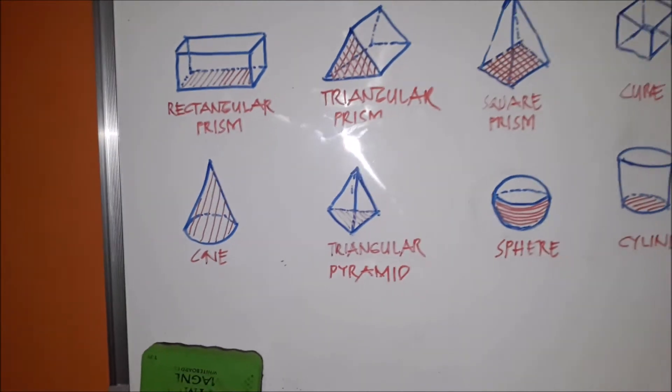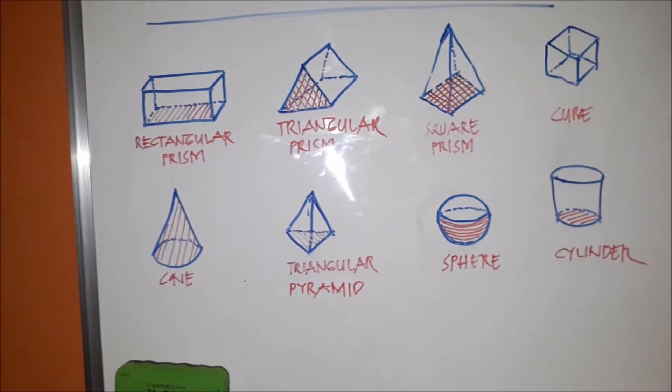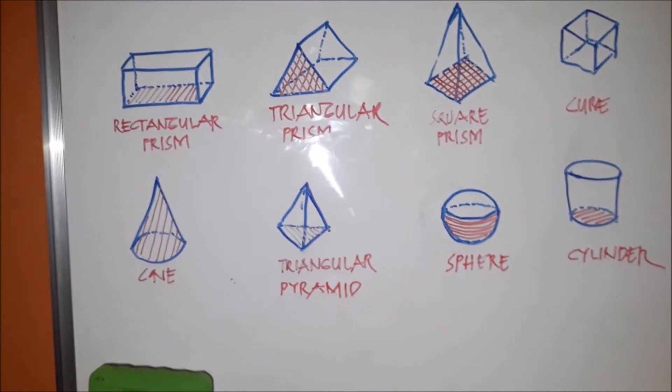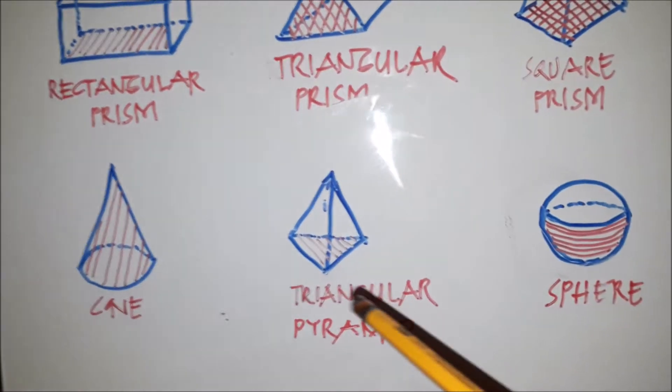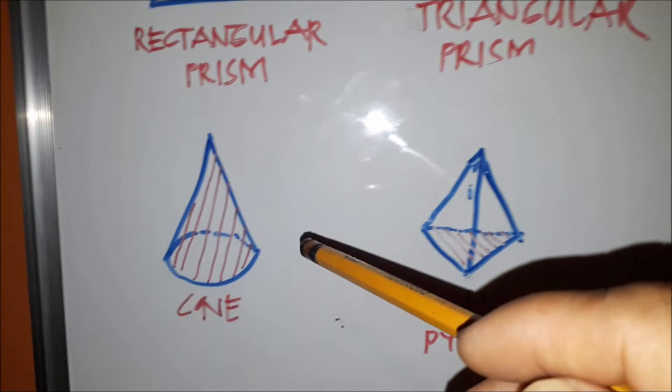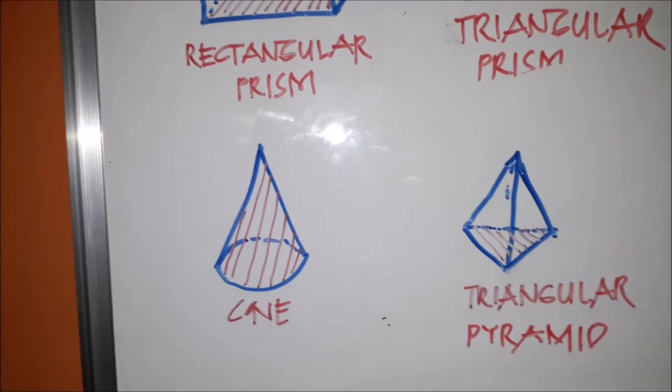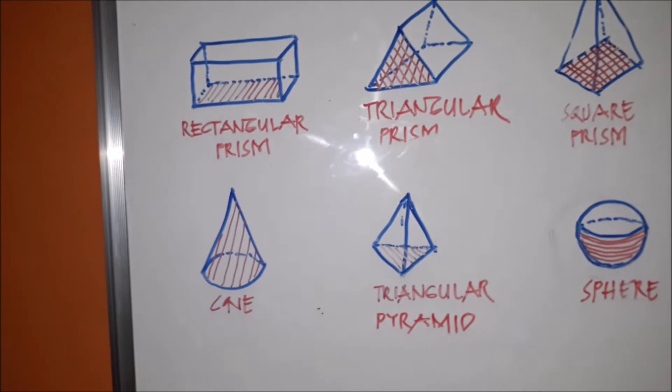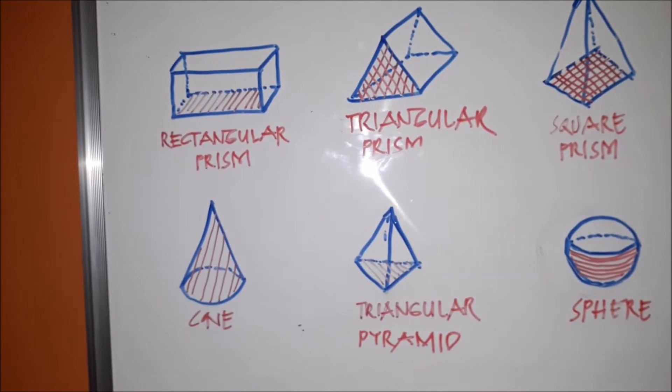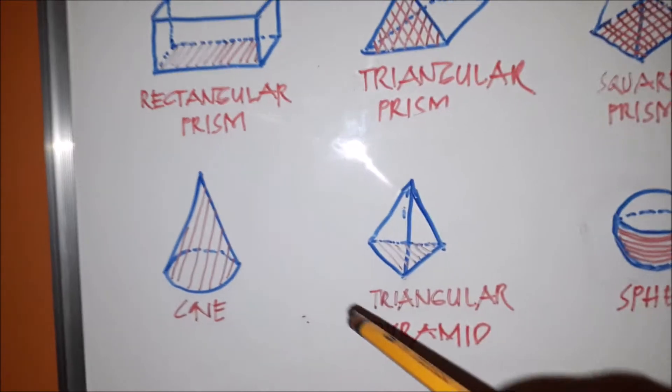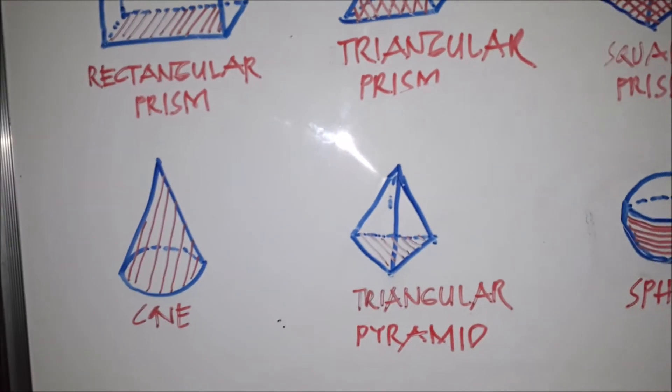And then we have one also very popular, is the cone. We have the circular base. When we want to eat, we want to buy ice cream, we prefer to call it, I need the cone ice cream. That is the cone, very popular.